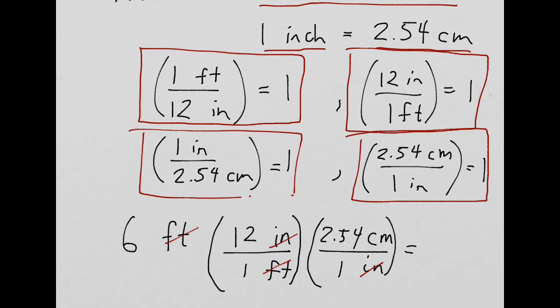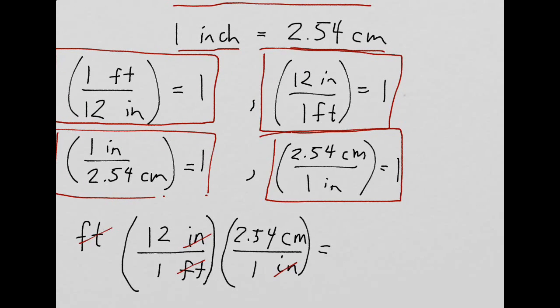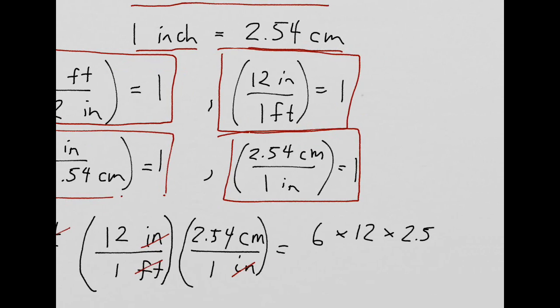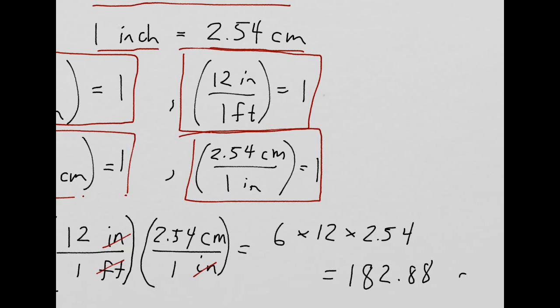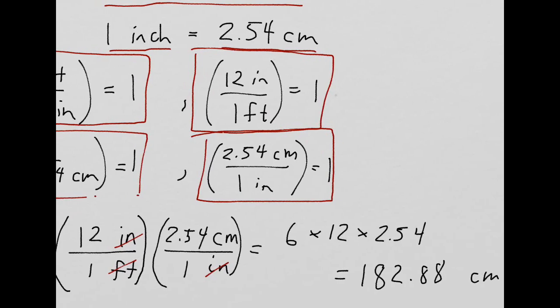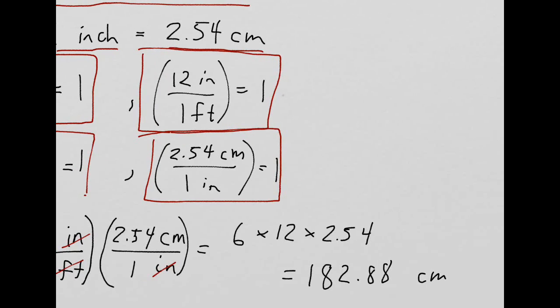So, this equals 6 times 12 times 2.54. And do that on our calculator. And we get 182.88. That's centimeters. So it's about 183 centimeters.